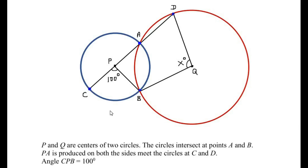Hello and welcome to my channel. In this video we are going to solve an example on geometry. P and Q are centers of two circles — P is the center of the blue circle and Q is the center of the red circle. The circles intersect at points A and B. PA is produced on both sides, extended until it reaches point C on one circle and point D on the other.